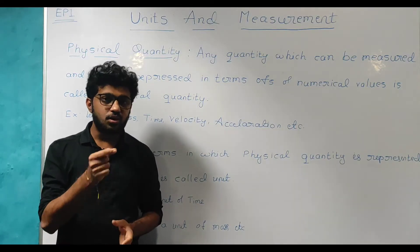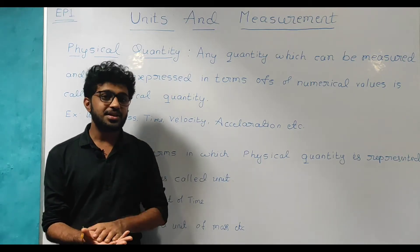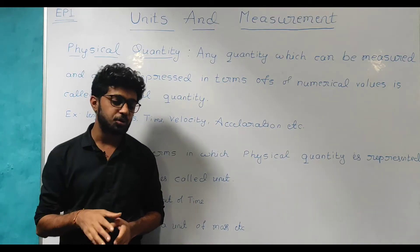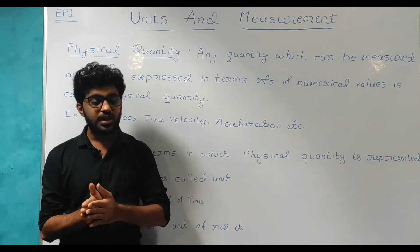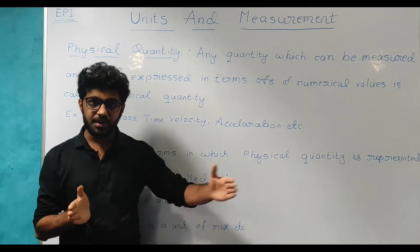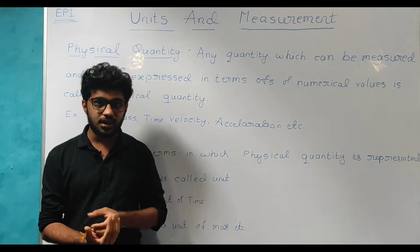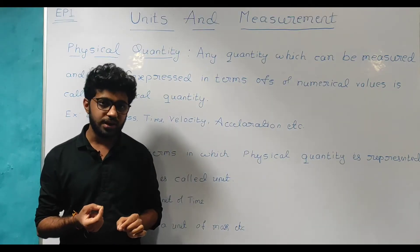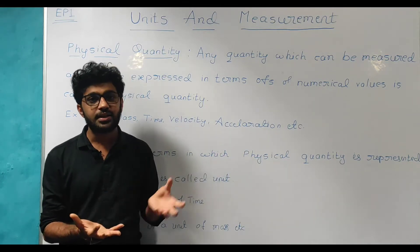All these quantities are called physical quantities. You can measure all the quantities and express them as numerical values. For example, in sports, we have running events like 100 metres and 200 metres. So the distance marked — 100 metres or 200 metres — is a physical quantity. Physical quantity here is the length, and that is a physical quantity expressed as a numerical value.